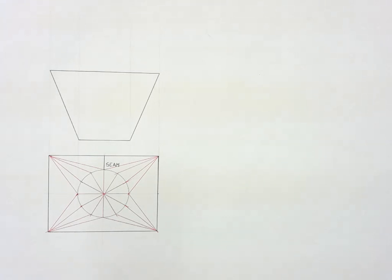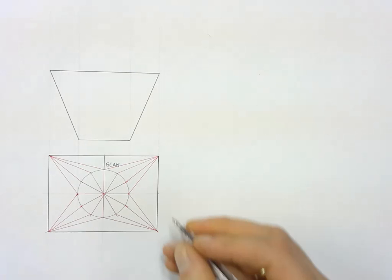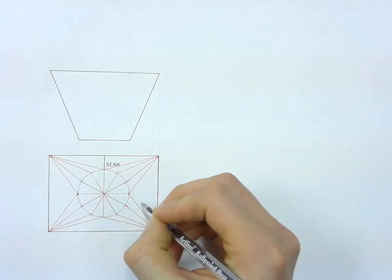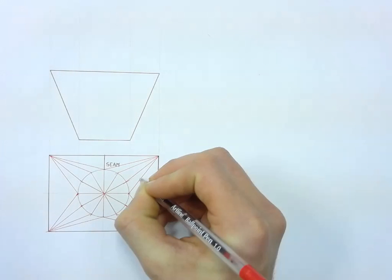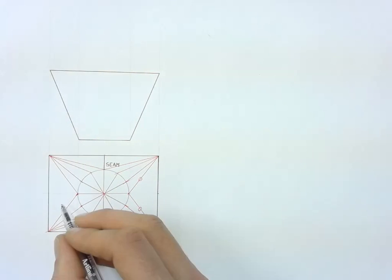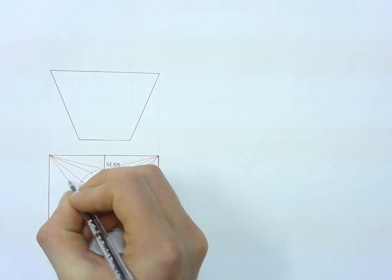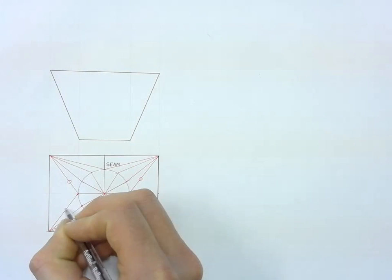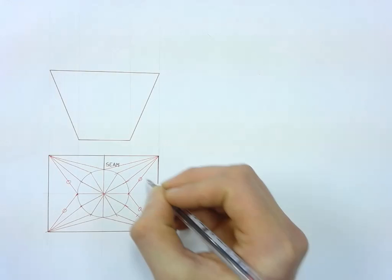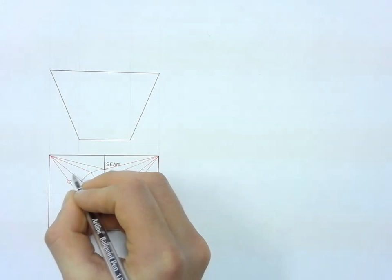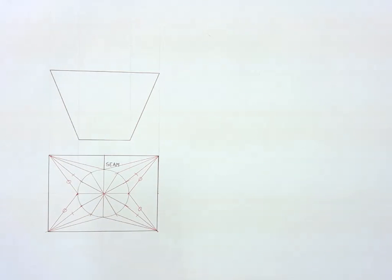Each of those lines that you have now drawn, you now have to go and find the true length of. The first thing to do is determine which of those lines are the same length. By measuring, we can see that these two lines here are going to be the same length — I am going to mark those with a circle. These two lines on this side are also the same length, so I am going to mark those with a circle as well. Then this line over here is the same length as that one, and also the same length as that one and that one — I am going to mark those with a single line.